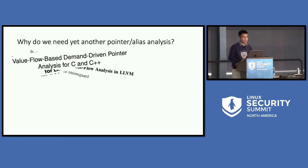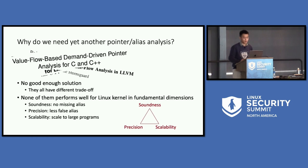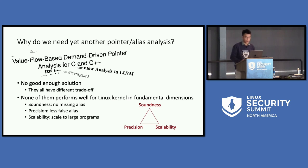The quick answer is that there is no good enough solution yet, because all of them take different design trade-offs, and none of them performs well for the Linux kernel in three fundamental dimensions: soundness, precision, and scalability. Soundness means there should never be true aliases missed. Precision means fewer false aliases. And it's very important to be scalable to the whole Linux kernel, which is quite large, with reasonable precision. Generally speaking, all these analyses can be divided into two categories: dataflow-based and type-based.